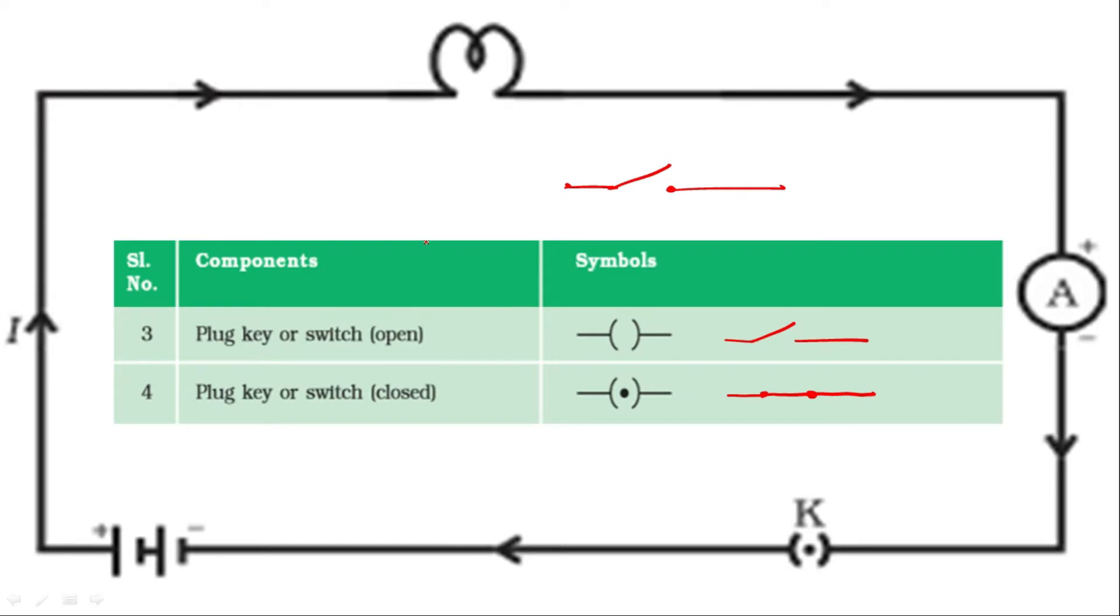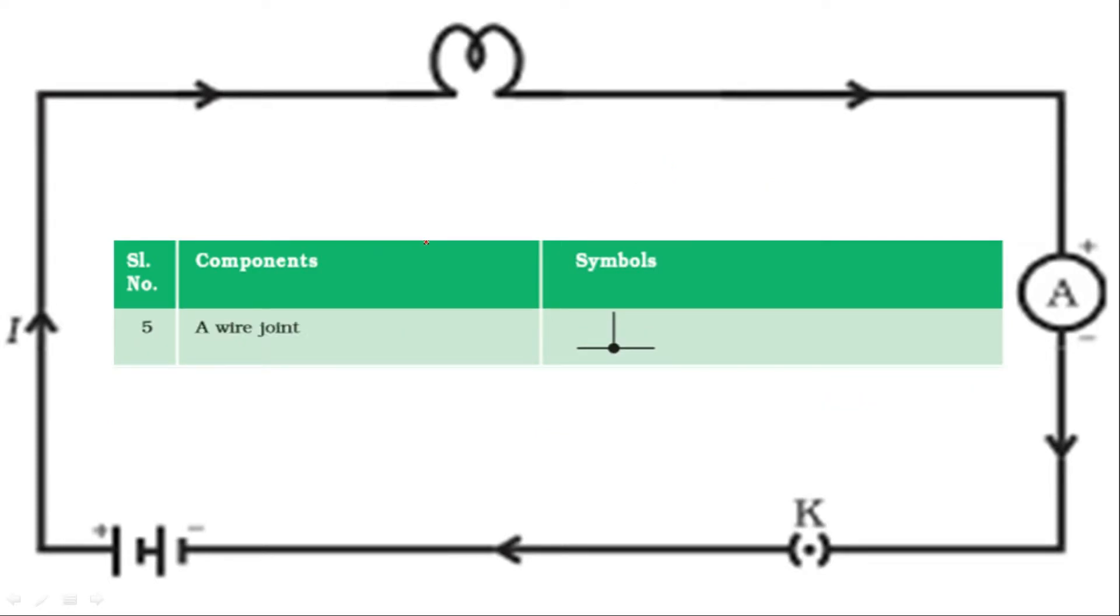Now if I talk about the wire joint, in many circuits we will join multiple wires together, then we have to symbolize it as wire joint in this symbol. And if two wires are crossing each other without joining, this is one wire and this is another wire, but both wires are crossing but are not connected, so we will symbolize it like this. This represents that these both wires are crossing each other, not connected with each other.